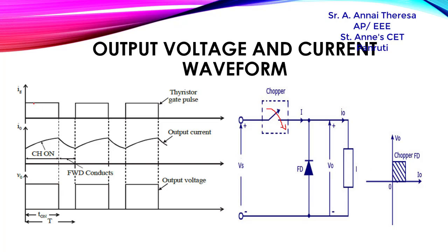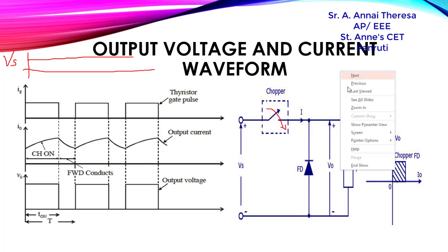The input is DC, and we can draw the input DC voltage like this. Whenever we give the gate pulse, the chopper will be in conduction mode. We give the gate pulse to the chopper from this duration to this duration — this is the Ton time. For this Ton duration the chopper is on, and we are getting output voltage and output current.